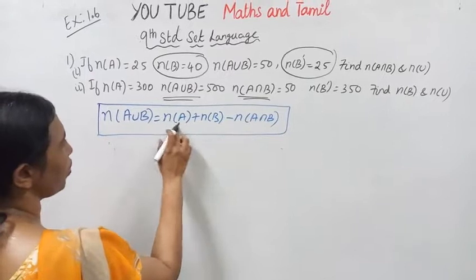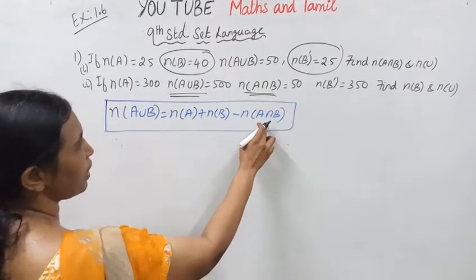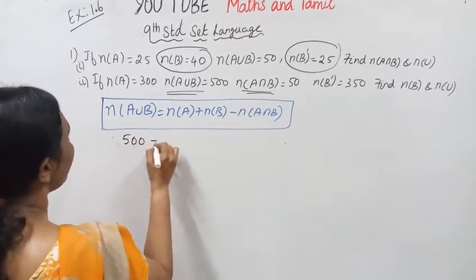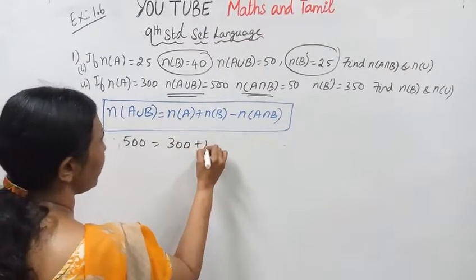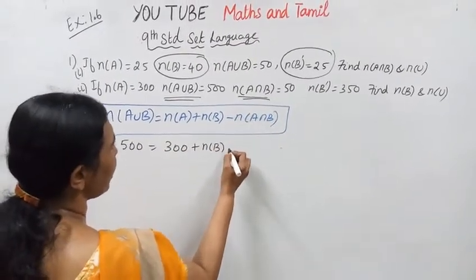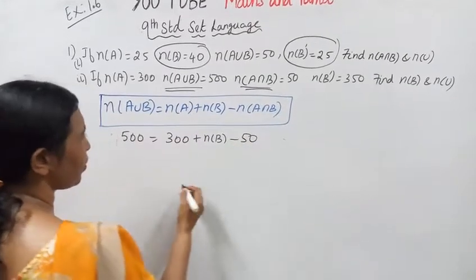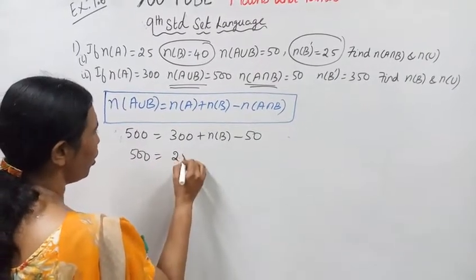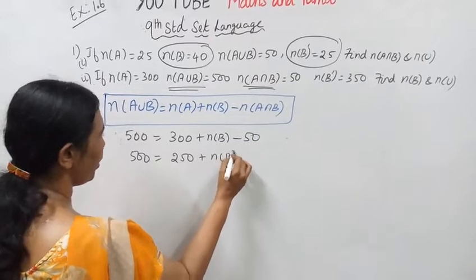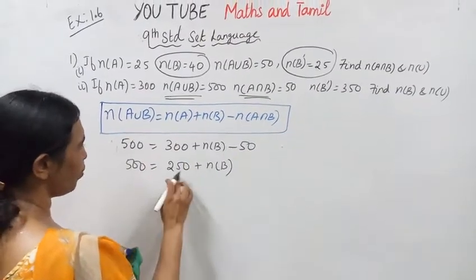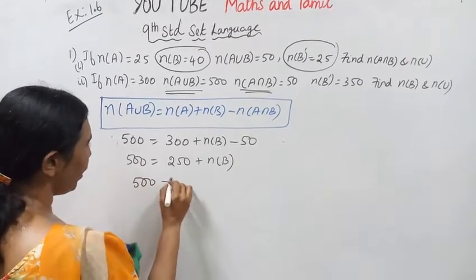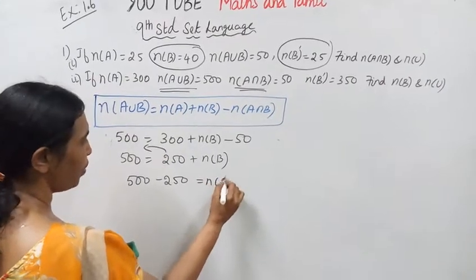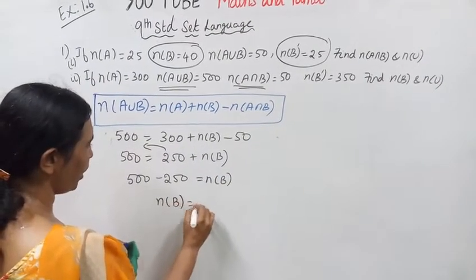N of A union B equal to N of A plus N of B minus N of A intersection B. N of A union B is 500, equal to 300 minus 50, that is 250, plus N of B. So 500 minus 250, N of B equals 250.